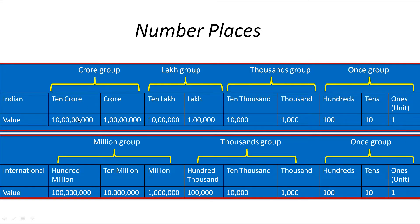Now in the international system, the places are: Ones, Tens, Hundreds, Thousands, Ten Thousands, Hundred Thousands, Million, Ten Million, and Hundred Million. The Ones group includes Ones and Tens, and the Thousands group includes Thousands, Ten Thousands, and Hundred Thousands — note the difference: in the Indian system, the Thousands group has only two places, but here it has three. The Million group includes Million, Ten Million, and Hundred Million.